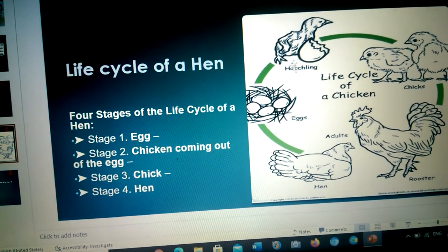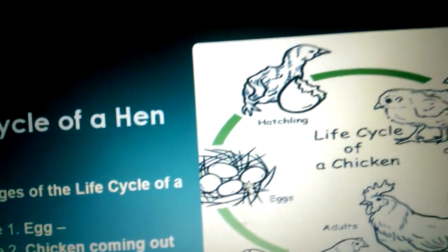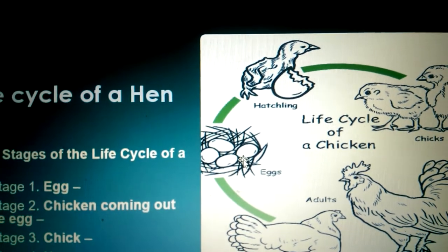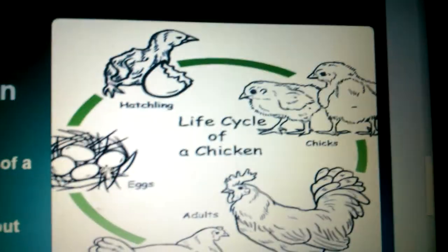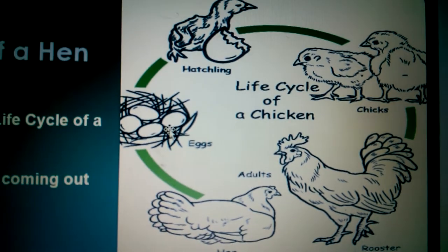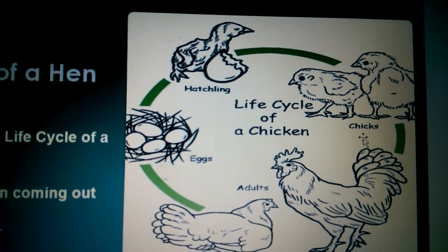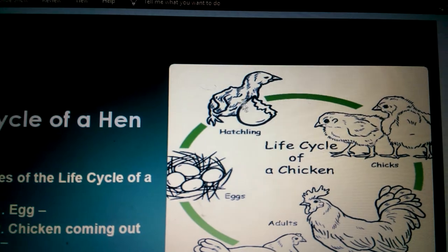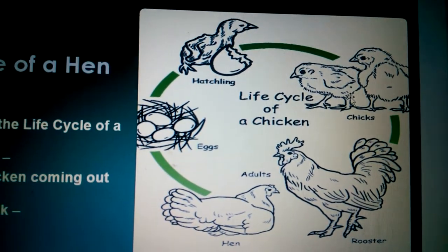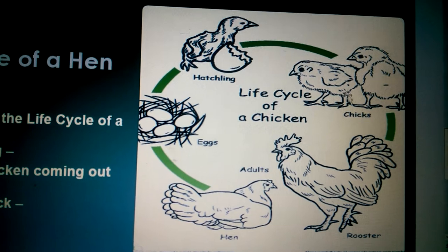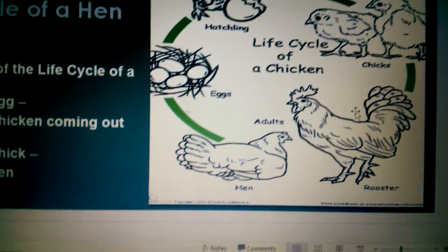Firstly, a hen lays eggs as you can see in the first picture, then it turns to a hatching. Hatching is a process when a chick comes out from the eggshell. In the third process we call it chicks — as you can see in the hatching, the chicks are a bit wet, but after turning to chicks they become dry and fluffy, and then finally it turns to a hen or a rooster.